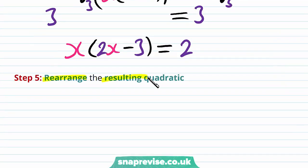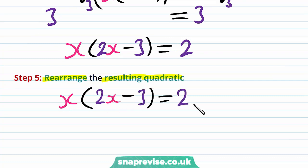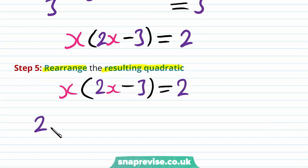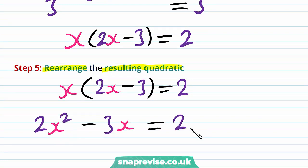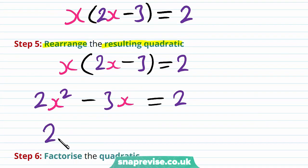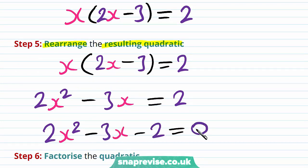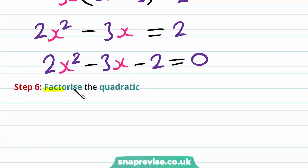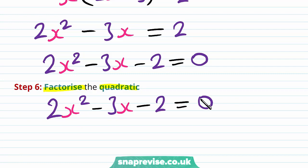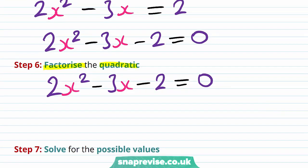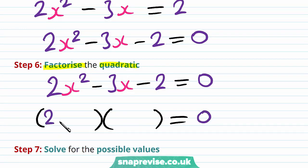Our fifth step is to rearrange the resulting quadratic. Our quadratic is x multiplied by 2x minus 3 is equal to 2. We can expand and we'll get 2x squared minus 3x is equal to 2. Therefore, we have 2x squared minus 3x minus 2 is equal to 0. Our sixth step is to factorise the quadratic. Our quadratic is 2x squared minus 3x minus 2 equals 0, and so we can factorise this as two brackets: 2x plus 1 and x minus 2, equal to 0.